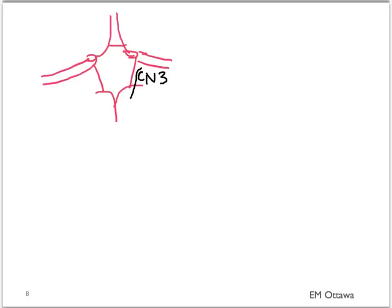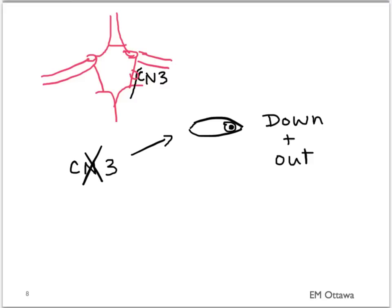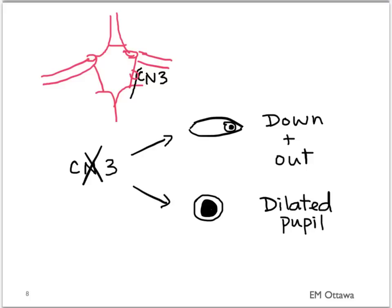An expanding aneurysm can also cause symptoms before it ruptures. Cranial nerve 3 runs very close to the posterior communicating artery, so an aneurysm there will compress cranial nerve 3, leading to the eye being down and out and lack of pupil constriction — the pupil therefore stays dilated. Whenever we see a cranial nerve 3 deficit that involves the pupil, we have to worry that there is a posterior communicating artery aneurysm compressing the nerve.